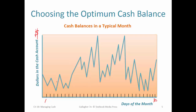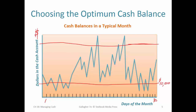A cash management procedure puts a floor on what we think we need to always have as a minimum. Depending on the size of the business and the magnitude of transactions, we might say we need to always have a minimum of $10,000 — for a larger business, that might be in the hundreds of thousands. And then there's a ceiling: we don't want to keep more than, say, $20,000.